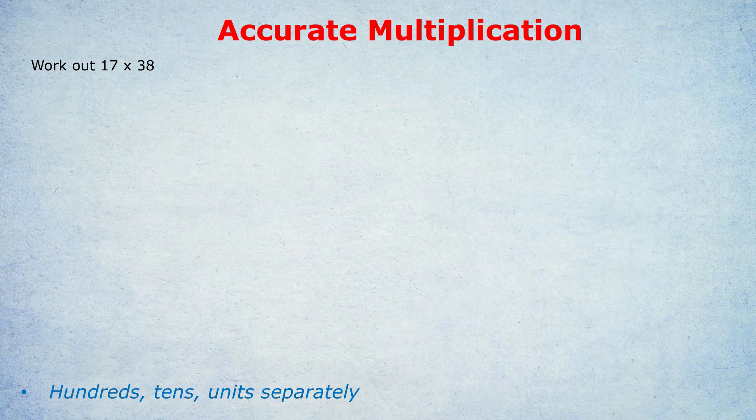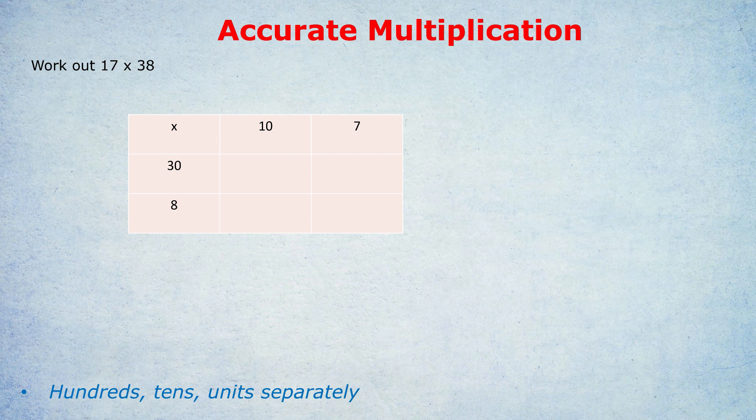Okay, 17 times 38. You can see on your screen what you do is you break down each number into its hundreds, tens, and units separately. So we draw a box out, usually a noughts and crosses, however many columns and rows as you need, and we separate off the tens and units in this case of 17 and 38. So instead of writing 17 in one of the rows, we write a 10 and then separately a 7. Instead of writing 38, we write a 30 and then an 8.